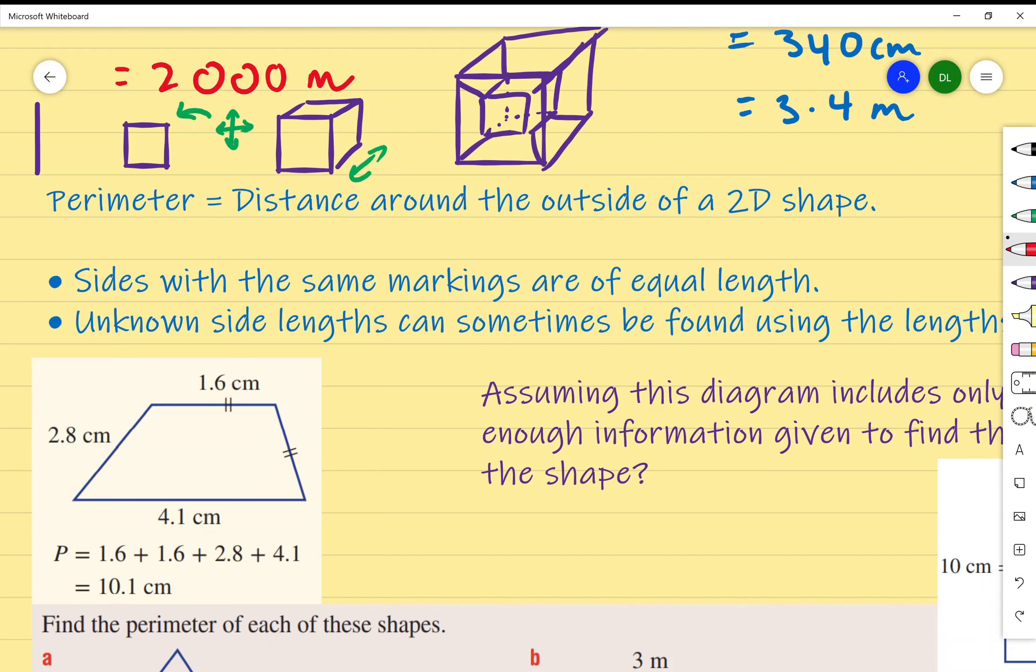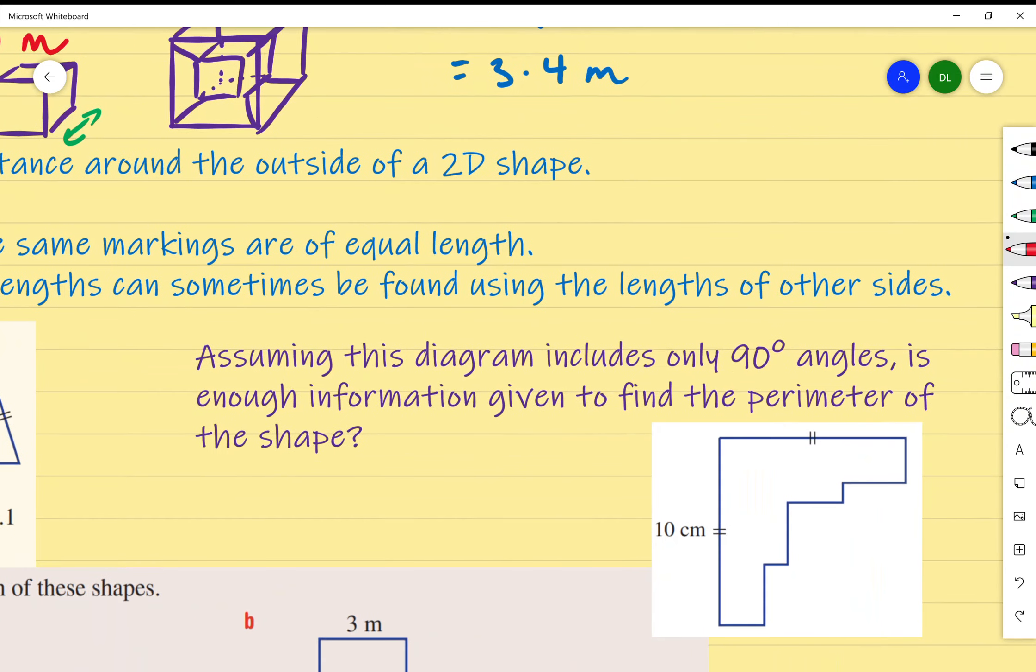One last thing: unknown side lengths can sometimes be found using the lengths of other sides. If you don't know the lengths of some sides, we can sometimes calculate the length based on the other sides. For example, if I give you a square and I tell you one side length, since it's a square you know it's all the same.